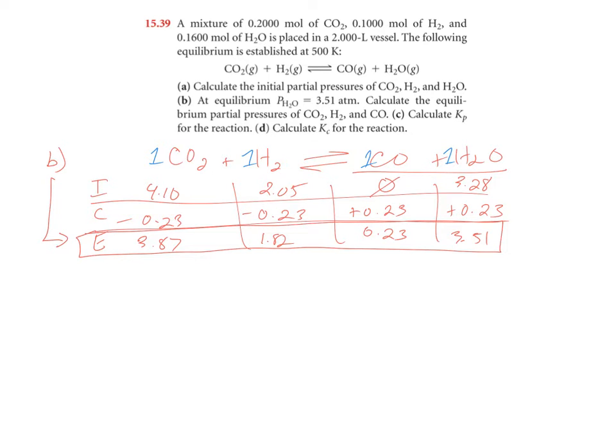Part C says calculate k sub p for the reaction. So Kp can be found by using your equilibrium constant expression. Where you have your concentration, in this case it's not concentration, it is just your pressures. So you have your pressure of CO times your pressure of H2O over your pressure of CO2 times your pressure of H2. These are all partial pressures.